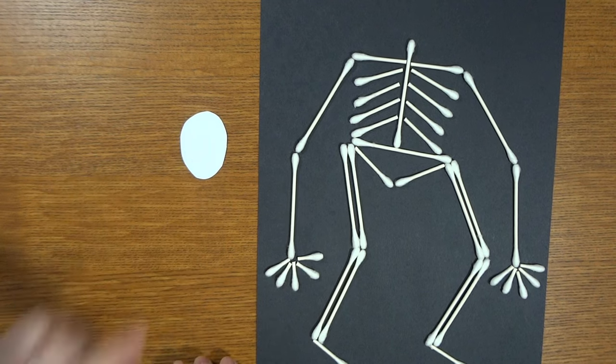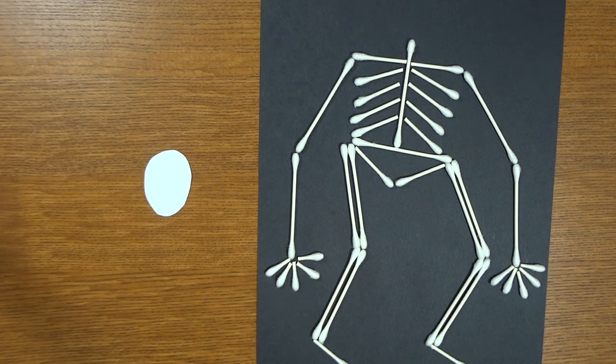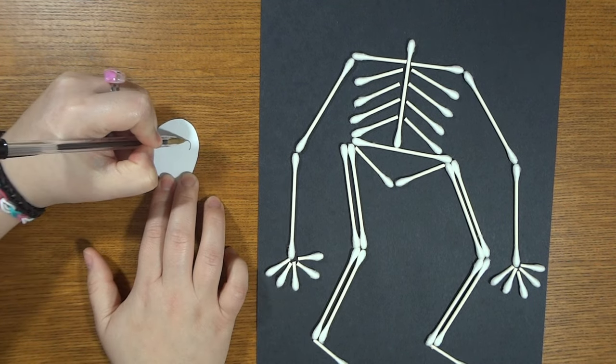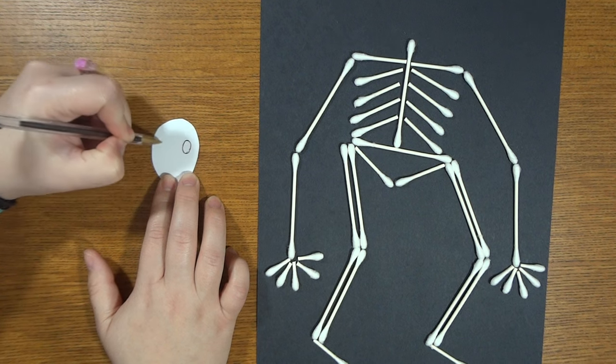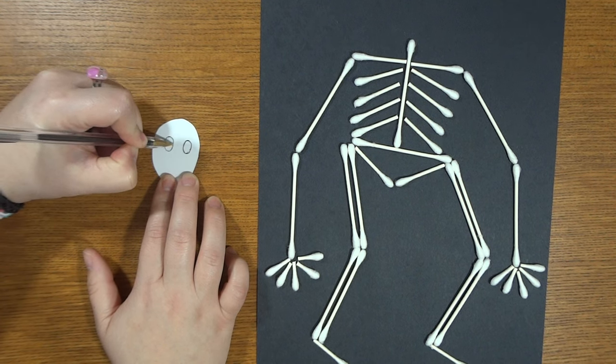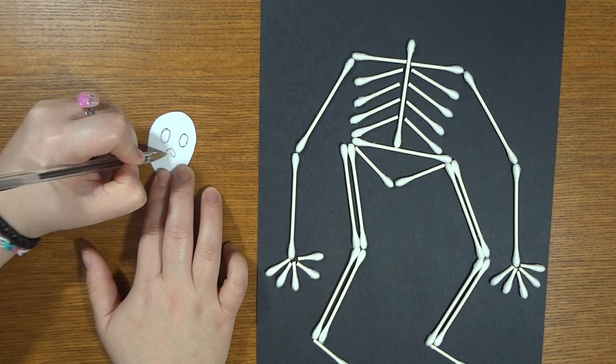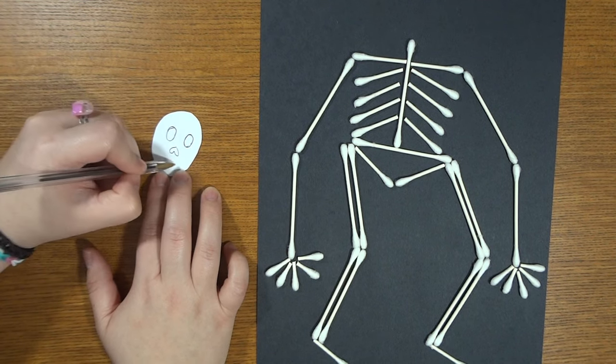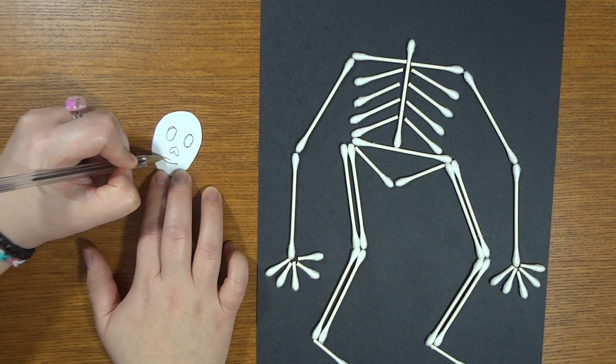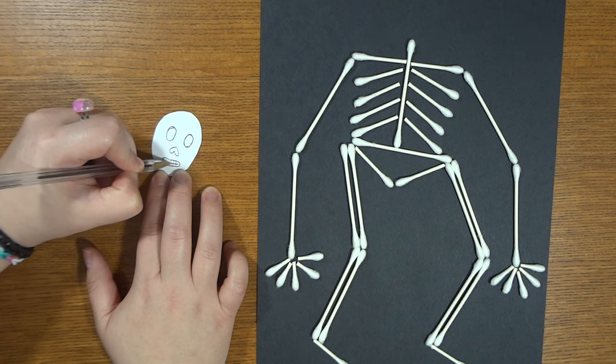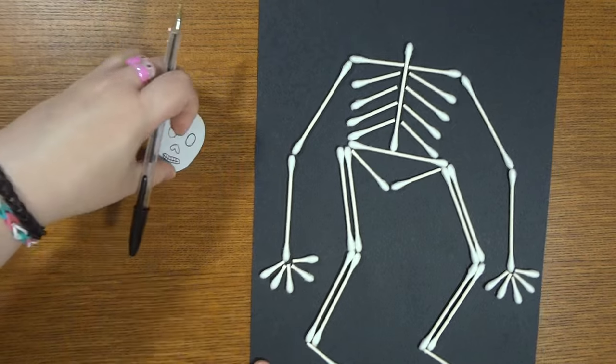...two little oval eyes, which you'll then color in, an upside-down heart for the nose, and then you've got your skeleton's teeth, just like that.